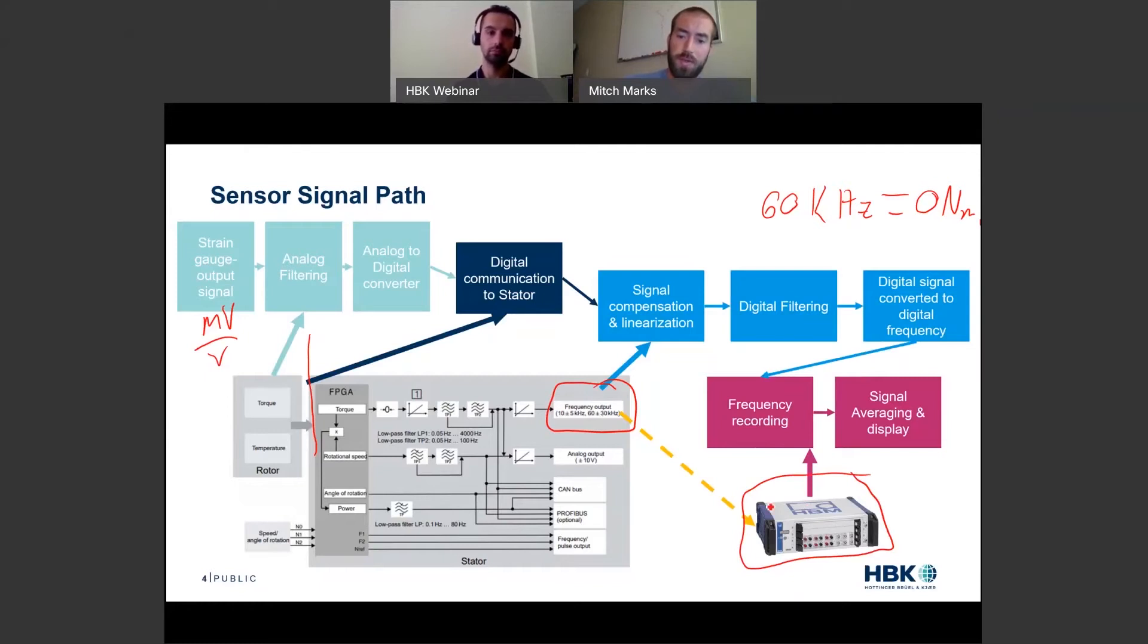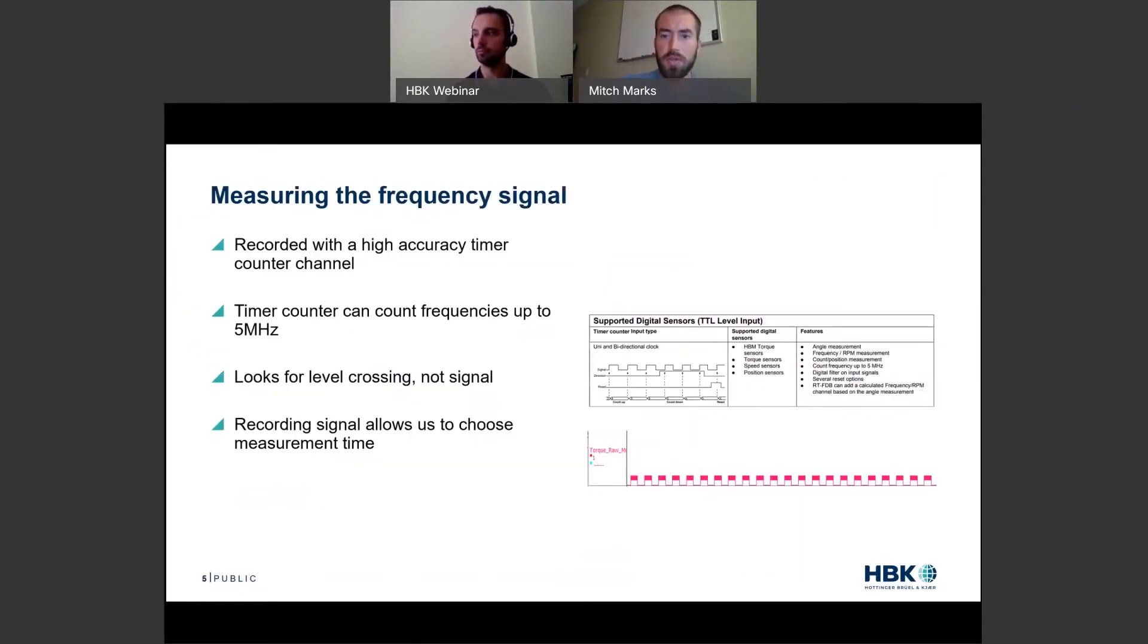So we're physically recording that frequency signal, we're interpreting it, and then we're averaging it on different time periods to display what you want. That physical frequency signal is measured into the E drive, and then we go from there. Let's look at that frequency signal.